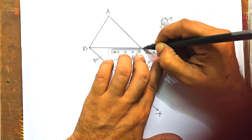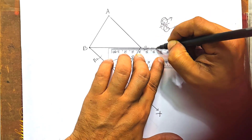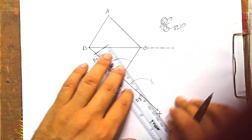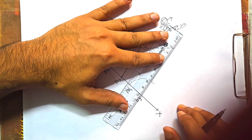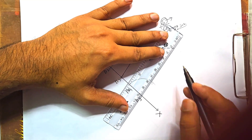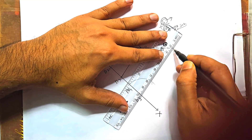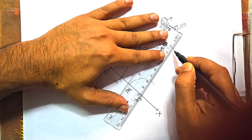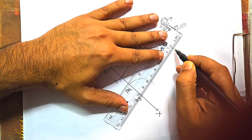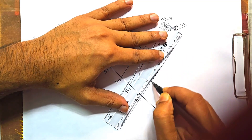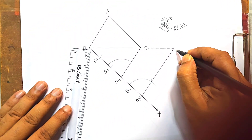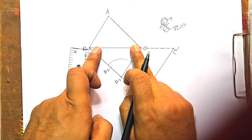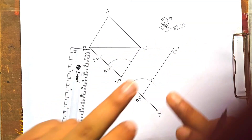Now we take B-C and add B-C. Now we take B-C, you make B-C, let them add B-C. When we add B-C, then add C-C.